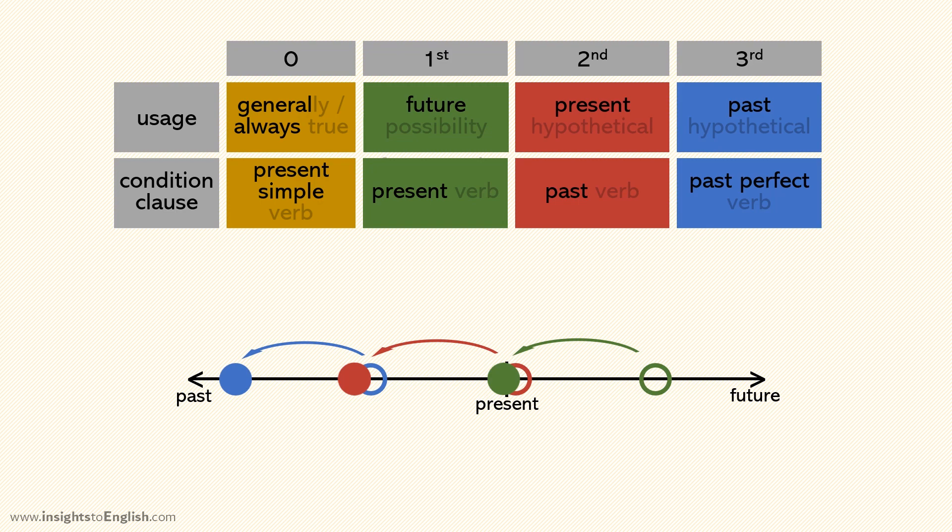Past perfect is like double past or super past. It happens before the past verb for whatever the context is. I see the pattern now. What is it? Every verb moves backwards. Exactly. We call this backshifting. The form is more past than the meaning.